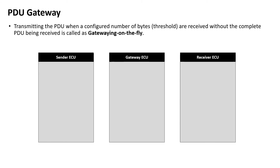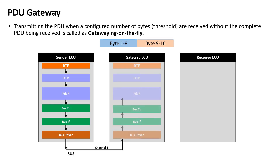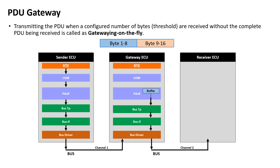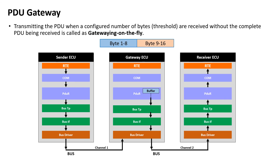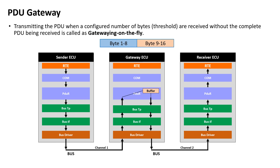Consider three ECUs: sender, gateway, and receiver ECU. Let's say we want to send 16 bytes of data using the TP module for transfer. The sender ECU will send the first 8 bytes on channel 1, and the gateway ECU will receive it. The PDUR copies the 8 bytes to an internal buffer and sends them over CAN channel 2, so the receiver ECU receives the first 8 bytes. In parallel, the gateway ECU stores the next 8 bytes to the buffer and sends them over CAN channel 2, so the receiver ECU receives the complete 16 bytes. This is called gatewaying on the fly, since the gateway ECU does not wait to receive the whole message before forwarding it.